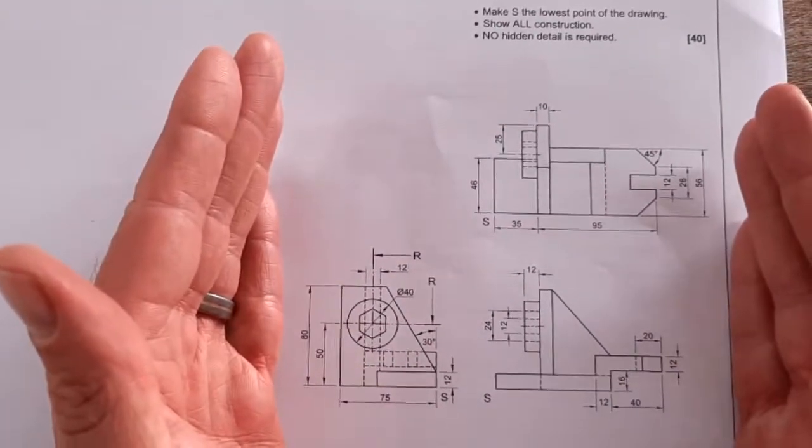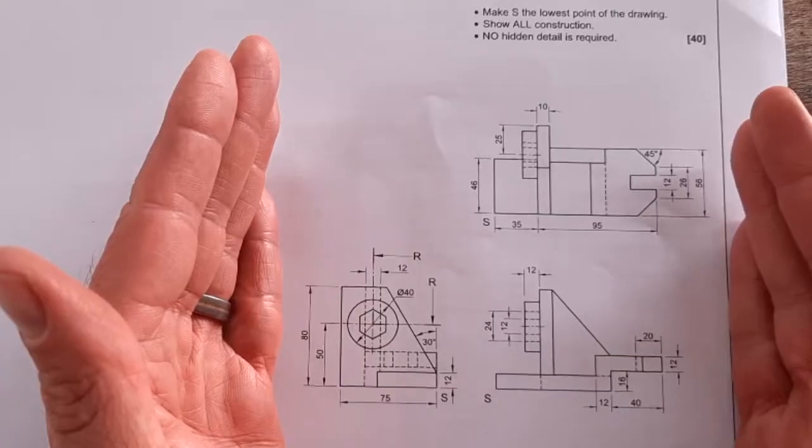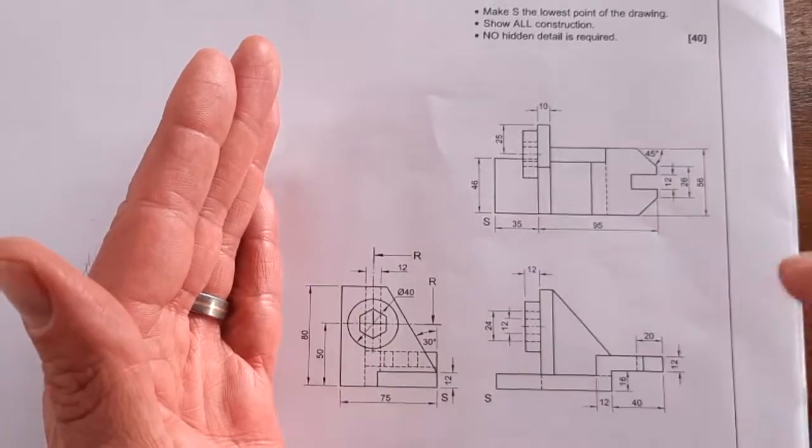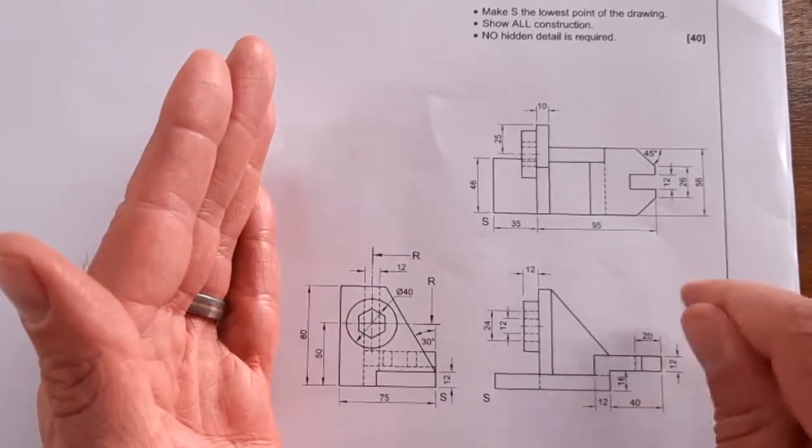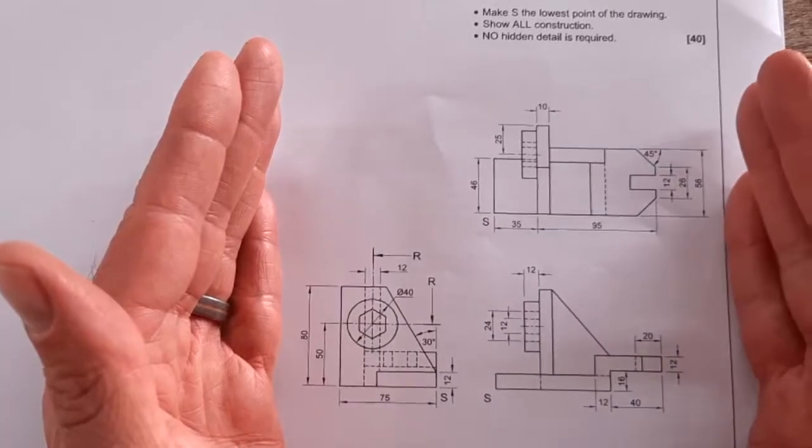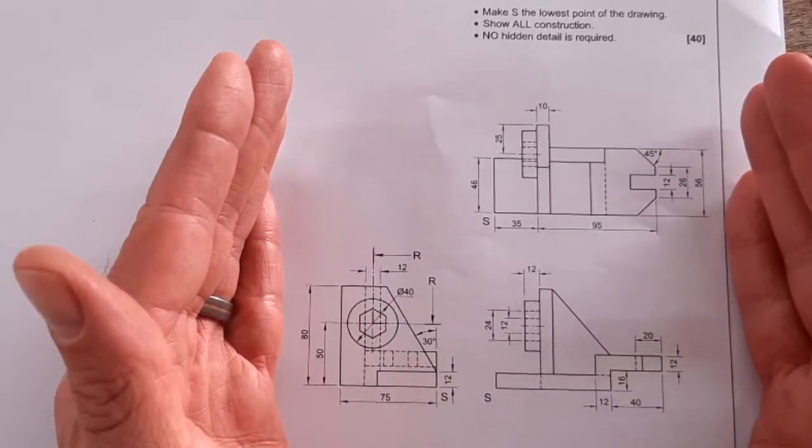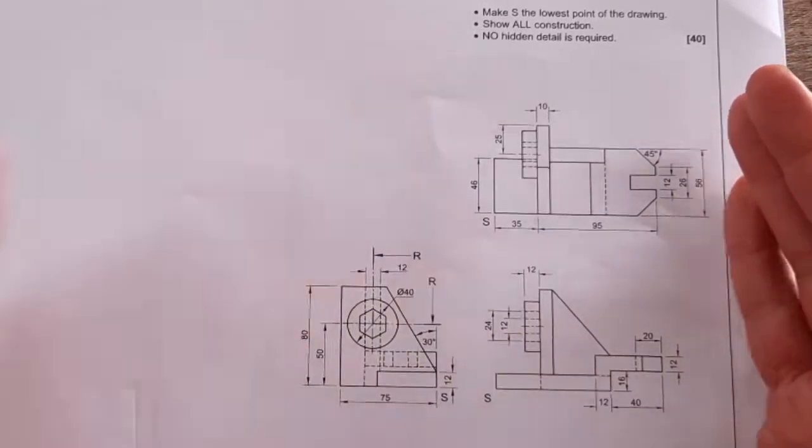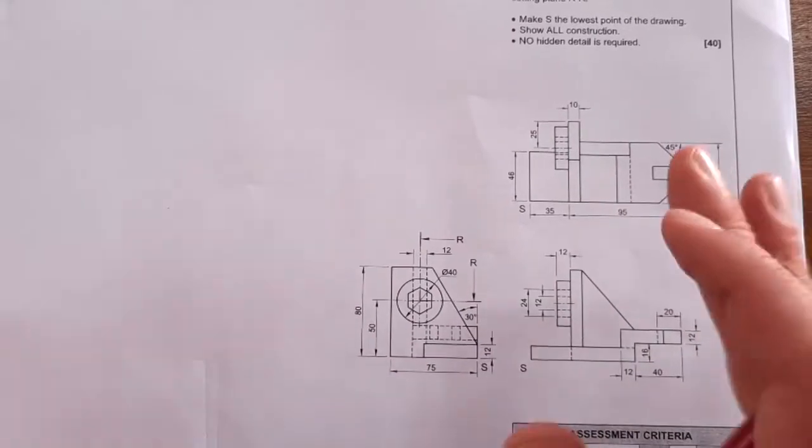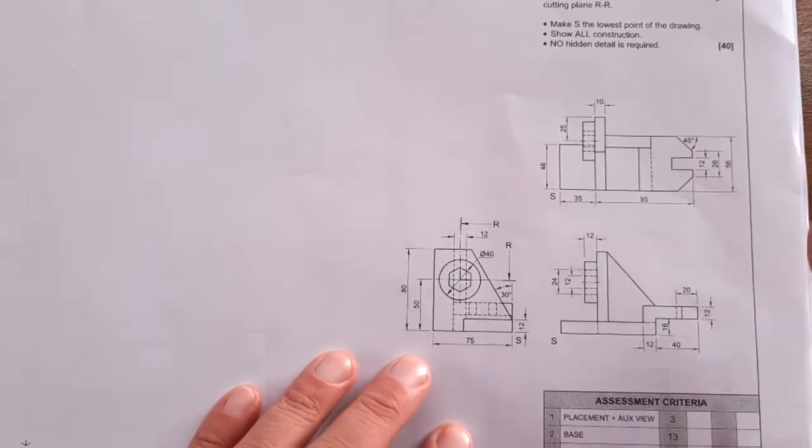Take time, ladies and gentlemen, when you get to this question, because it is 40 marks. You know you are going to get an isometric drawing. You must be able to draw these drawings with absolute confidence. Make sure you are well prepared to answer this question in full.